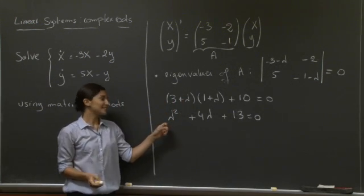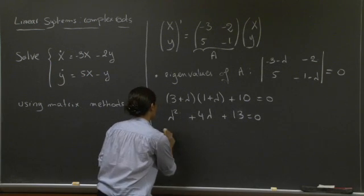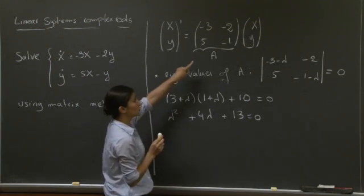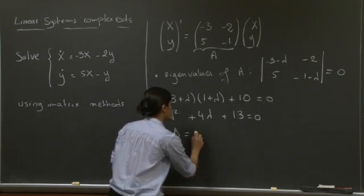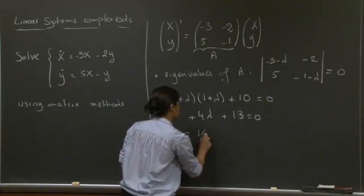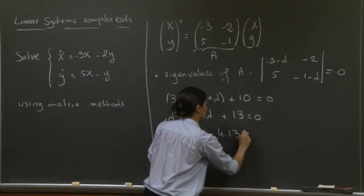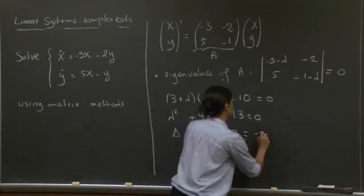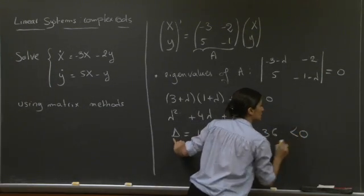So this second order polynomial in lambda will give us the two eigenvalues for this matrix. So let's examine the discriminant. So we have b squared minus 4ab, and this gives us minus 36. So the discriminant is negative.